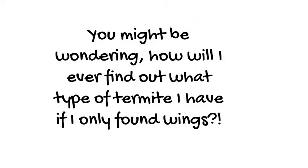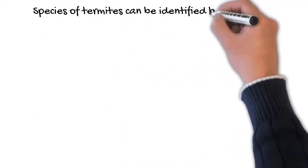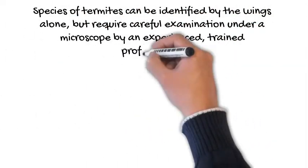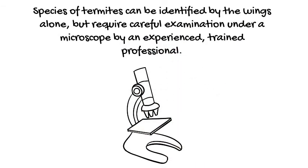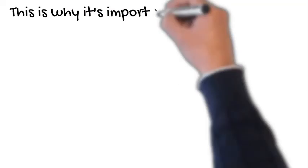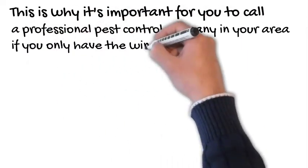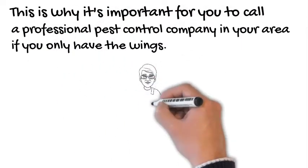You might be wondering, how will I ever find out what type of termite I have if there's only wings that I found? Species of termites can be identified by the wings alone, but this requires careful examination under a microscope by experienced trained professionals. This is why it's important for you to call a professional pest control company in your area if you only have wings.